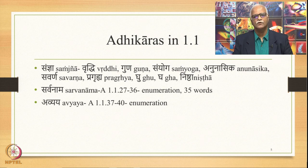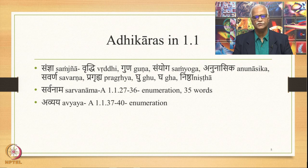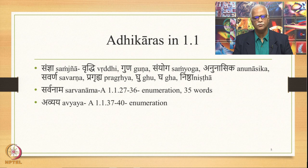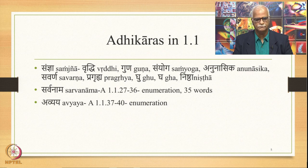All of these are stated in 1.1. There are 35 words which are part of the group called Sarvanama — a definition by enumeration. So also is the case of Avyaya, a definition by enumeration. All these Saudhnyas are part of 1.1.